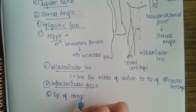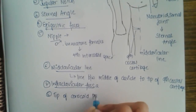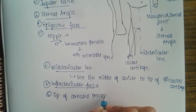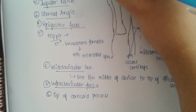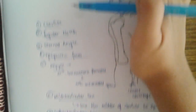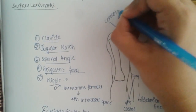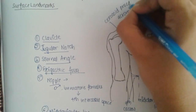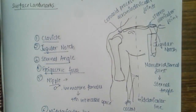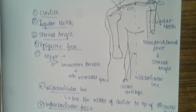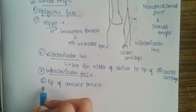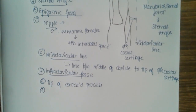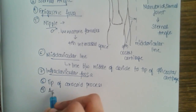The eighth landmark is the tip of the coracoid process. The coracoid process is present in the scapula. We will see this with demonstrations in the next class. The ninth landmark is the acromion of the scapula.